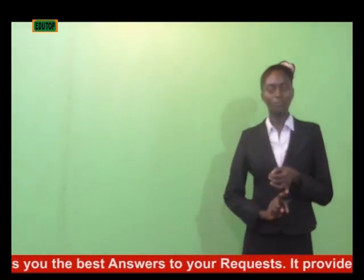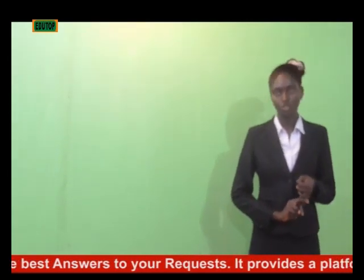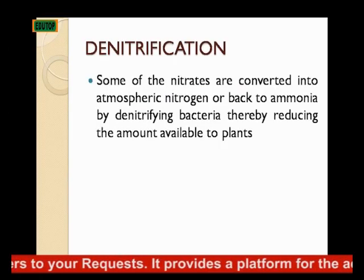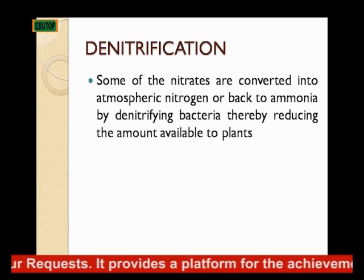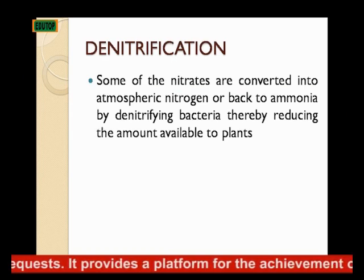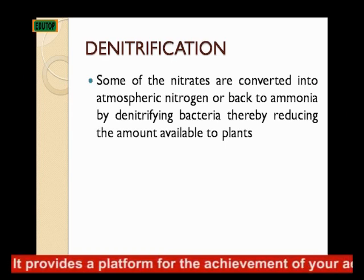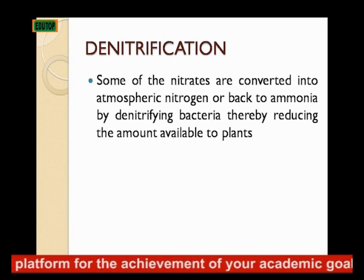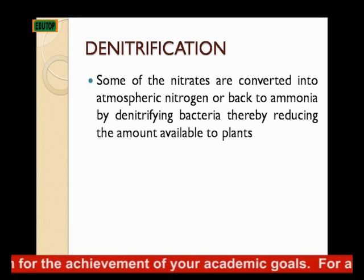The third process is denitrification. Some of the nitrates are converted into atmospheric nitrogen or back to ammonia by denitrifying bacteria, thereby reducing the amount of nitrogen available to plants.